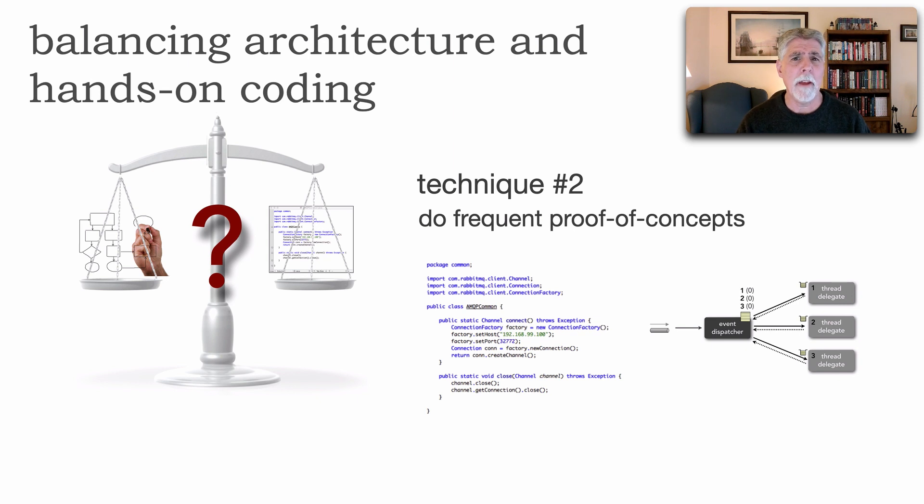One of the things that you can do is frequent code proof of concepts. As an architect, we take a look at modeling different designs. And if I've got a choice between a couple of options or if I'm not sure this will work, I'm not sure about the scalability or the performance attributes, then by all means, code it. This gives you two things. This is also a win-win. Not only are you getting exercise and actually programming, so you keep that current,